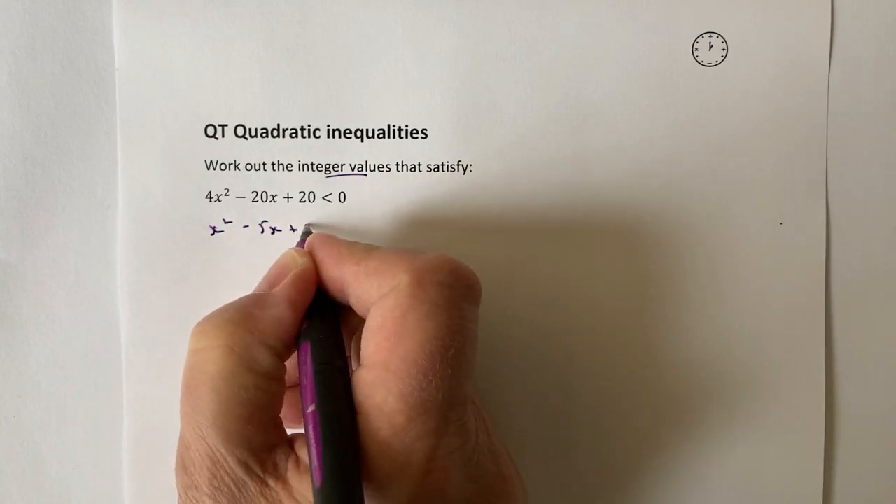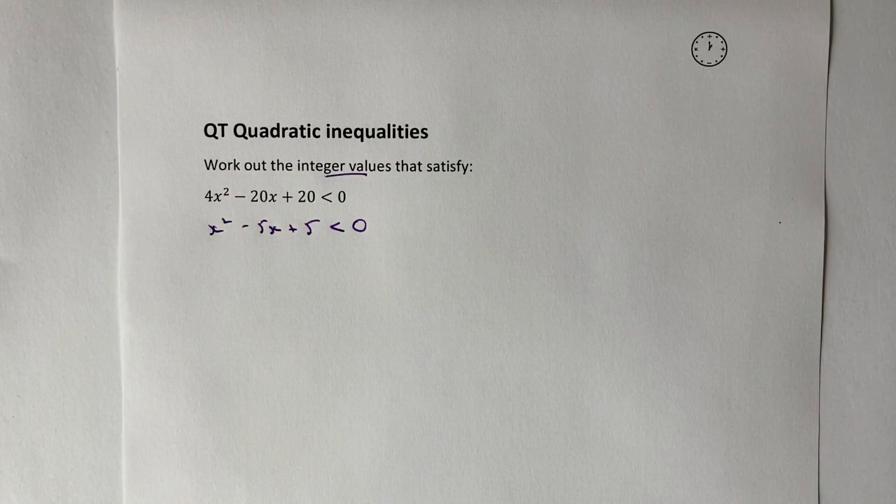The second thing is I've got 4x² - 20x + 20. So actually, I can just divide through by 4 and rewrite this equation as x² - 5x + 5 < 0. And it just makes my life a little bit easier and the numbers are easier to deal with.